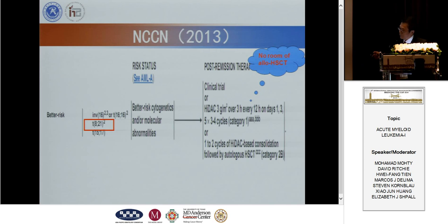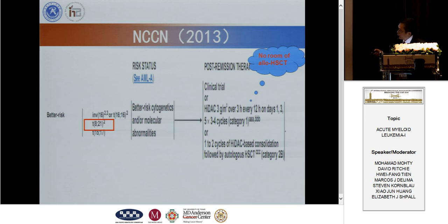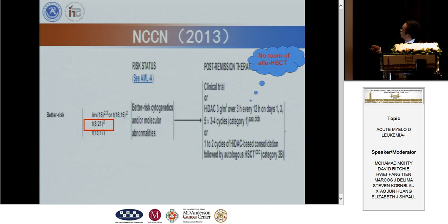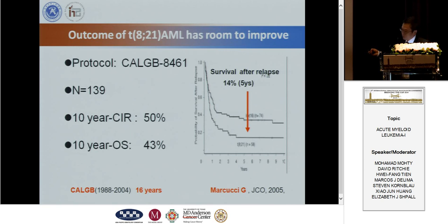As all of you know, according to NCCN and WHO classification, t(8;21) translocation was considered a favorable disease, so transplantation was not recommended. But actually, even t(8;21) translocation has a 50% ten-year relapse rate.